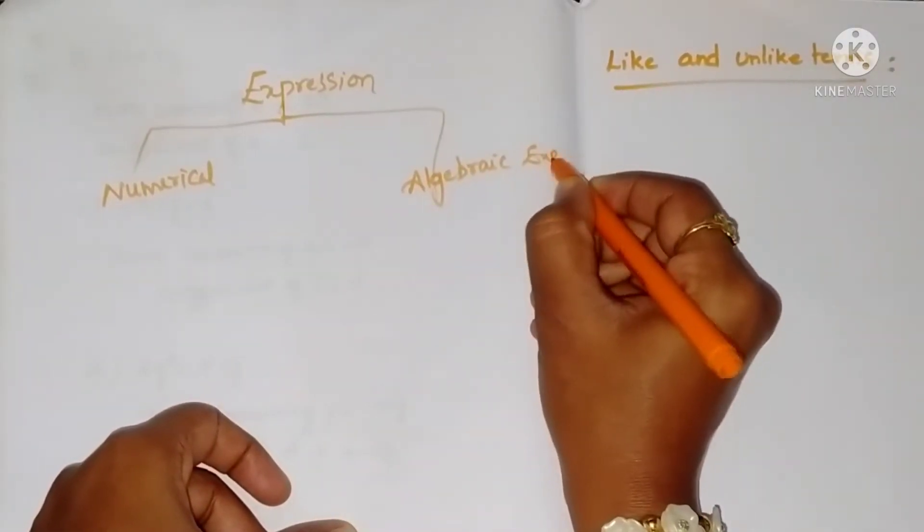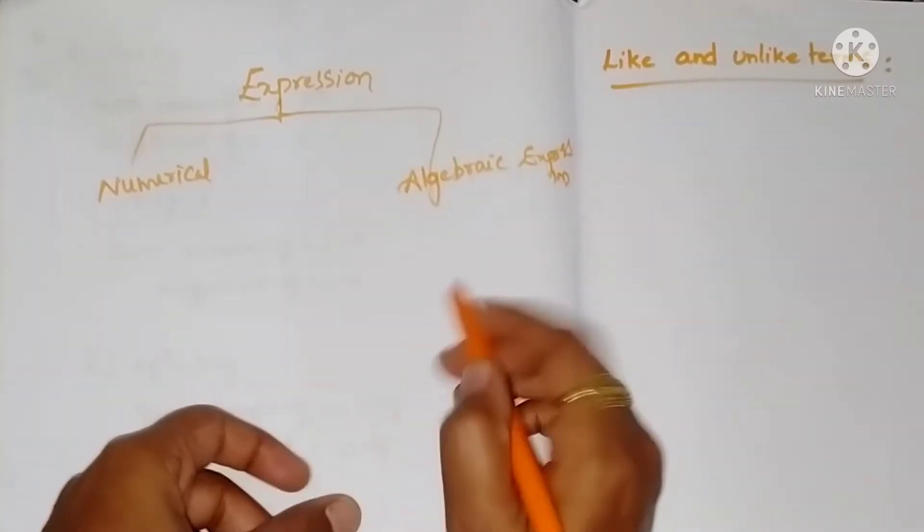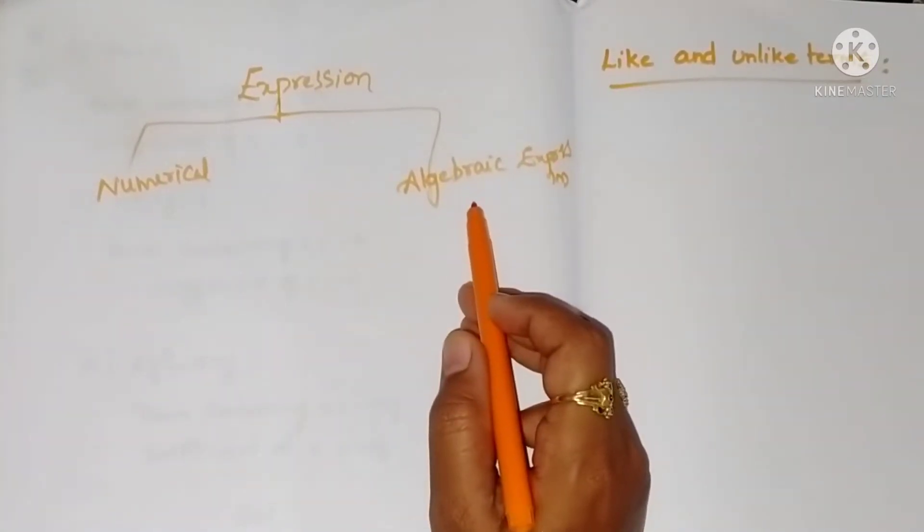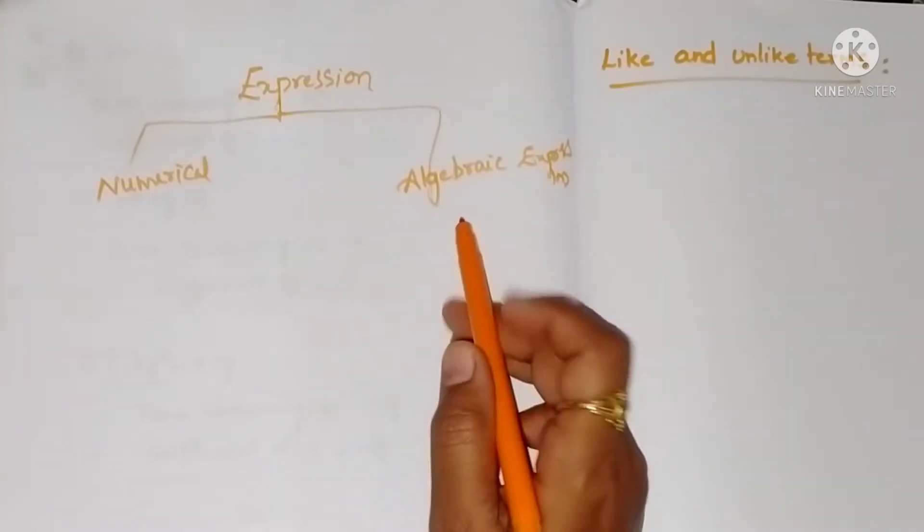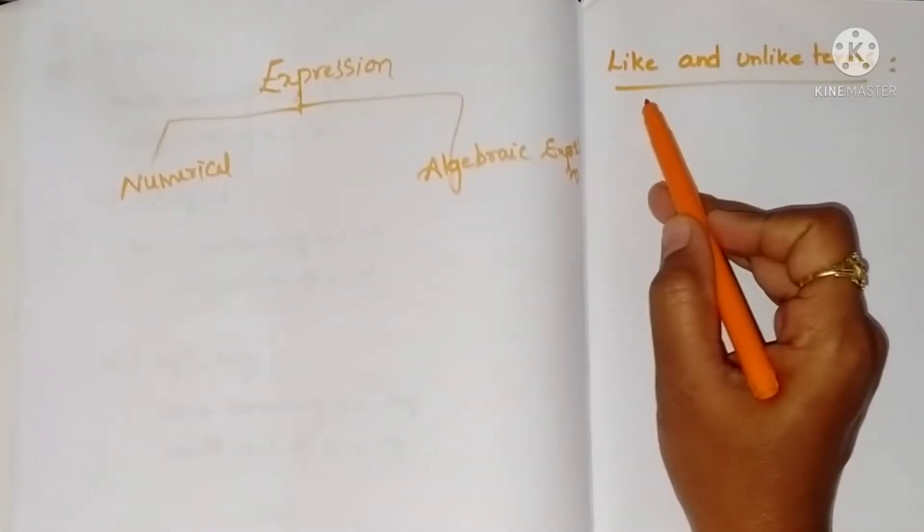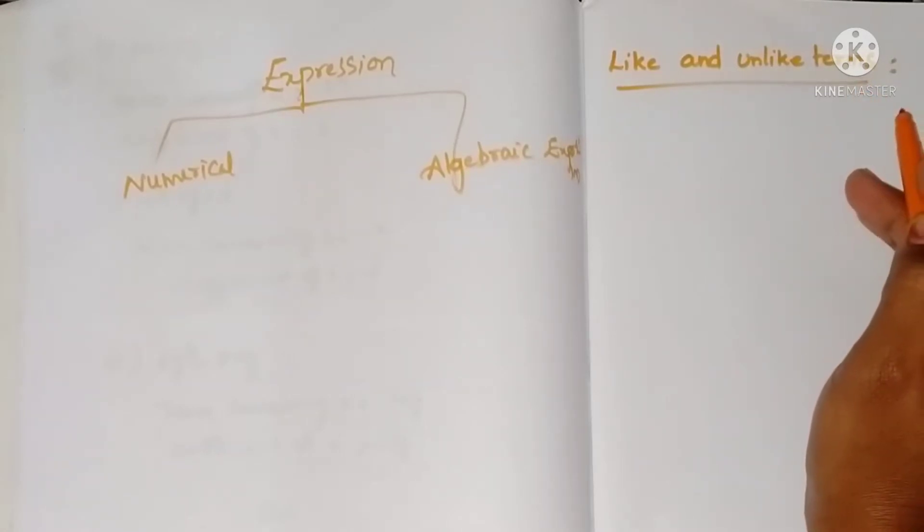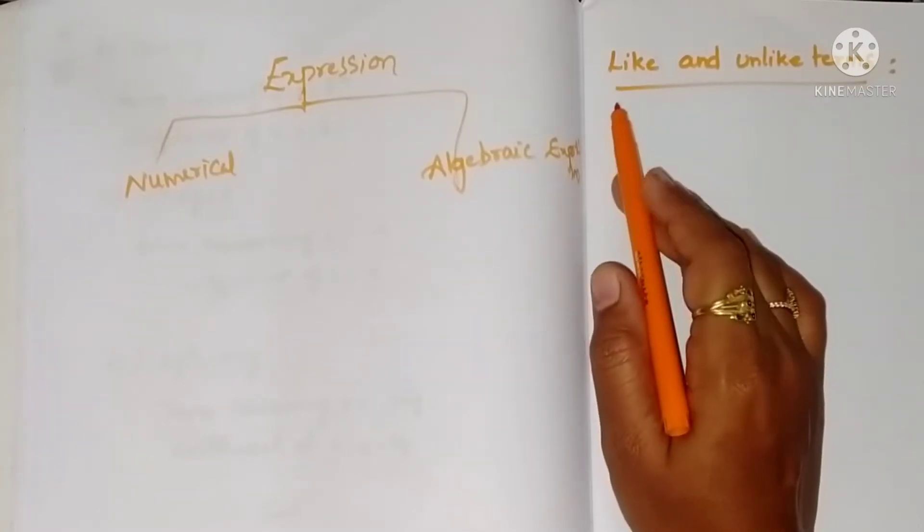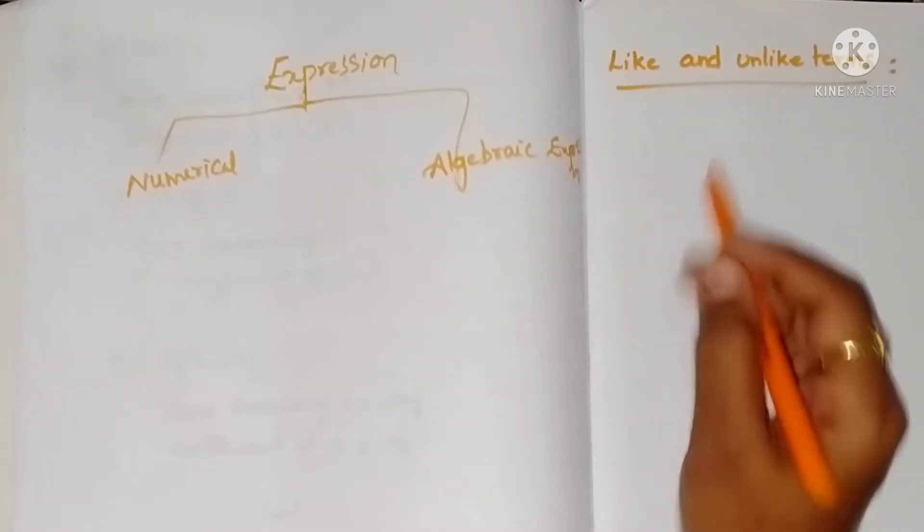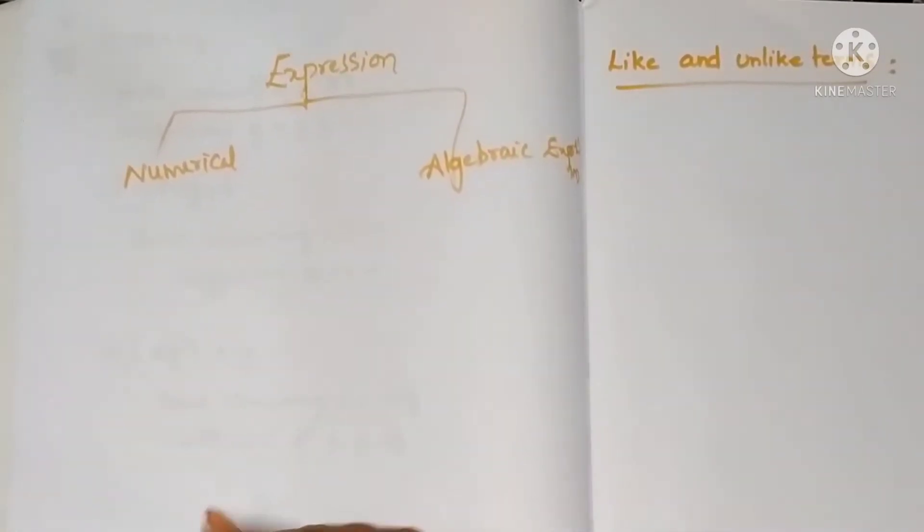This algebraic expression, based on the nature of the terms, we can divide into like and unlike terms. To understand in a better way what like and unlike means, suppose if you went to the market.